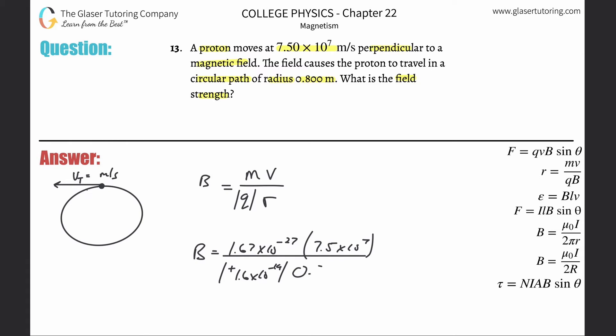Times the radius, and they told that to you, it's 0.8 meters, those are the standard units. So all we got to do is simply plug and chug. So 1.67 times 10 to the minus 27th, multiplied by 7.5 times 10 to the seventh, divided by parenthesis 1.6 times 10 to the minus 19th times 0.8. Close the parenthesis, and here we're going to get a value of 0.979, roughly, Tesla.